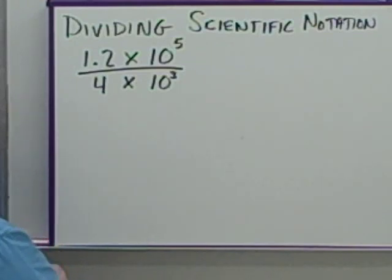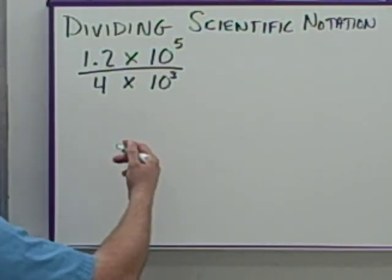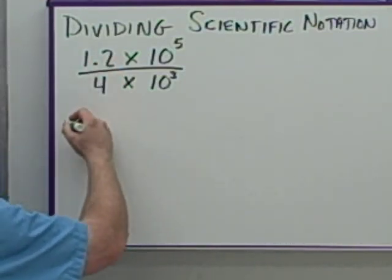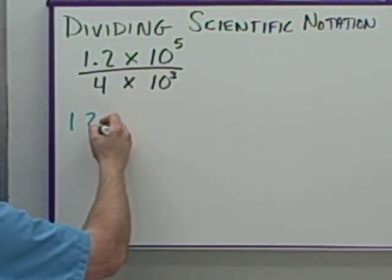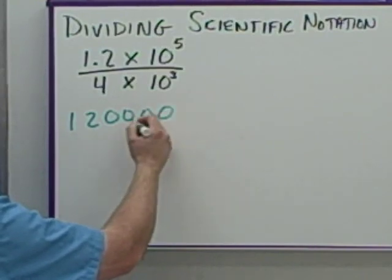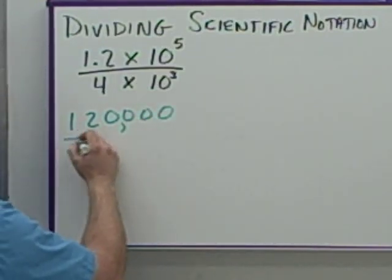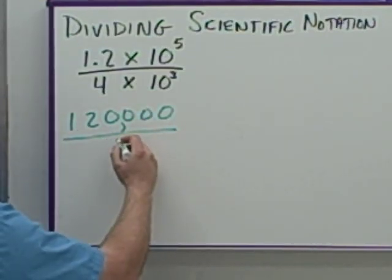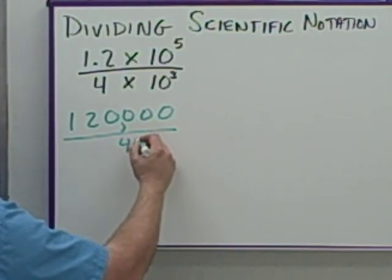Dividing. Again, if I were to do this the long way, I would do 1.2 times 10 to the 5th would be 1, 2, 3, 4, 5. I'd get 120,000 divided by 4,000.